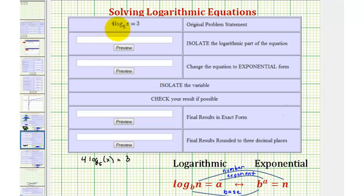So because our equation is four log base five of x equals three, which means four times log base five of x equals three, the first step is to divide both sides by four to solve for the logarithm.